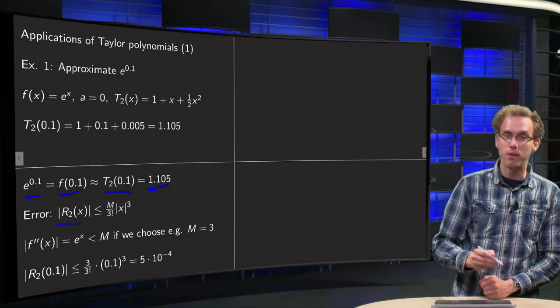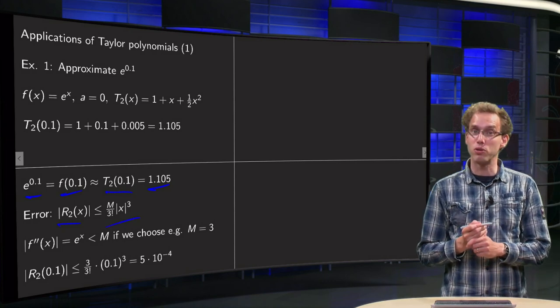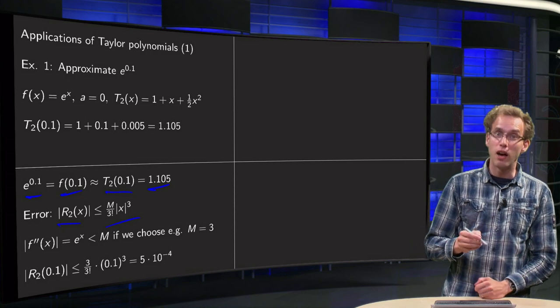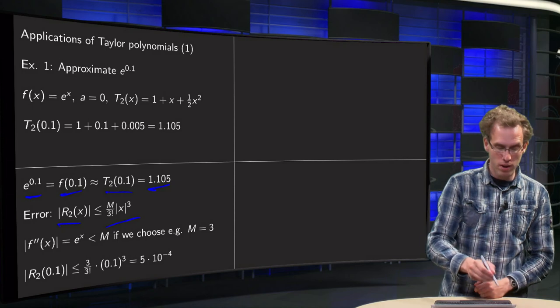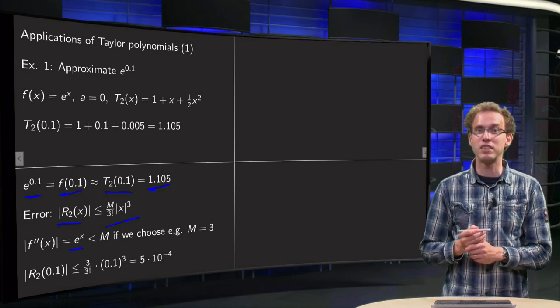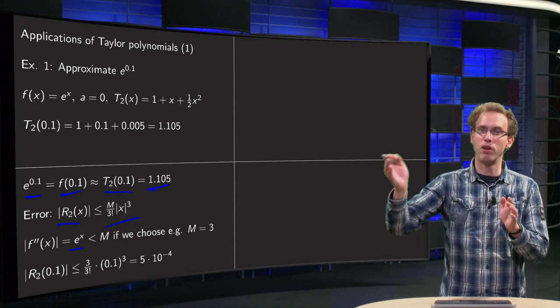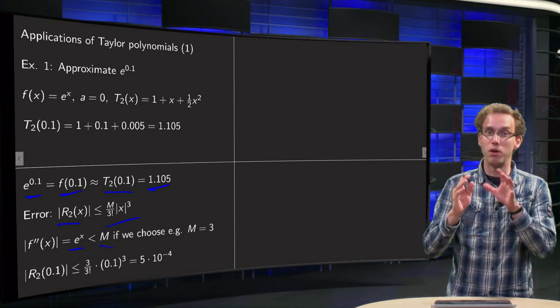Well the error, the modulus of the error is smaller than M over 3 factorial times x cubed, and we can estimate that. We know f(x) equals e to the power x is the second derivative as well, so f double prime equals e to the power x, it has to be smaller than some maximum. Well we are somewhere between 0 and 0.1, so we are well below 1.